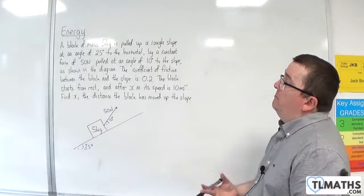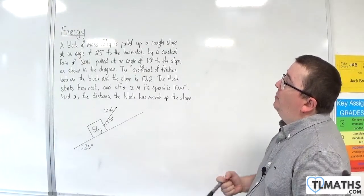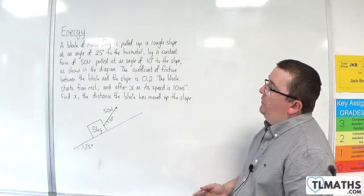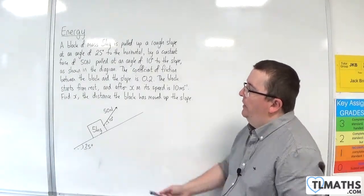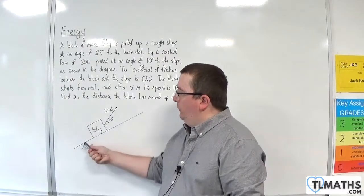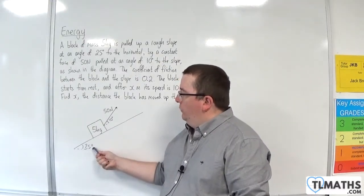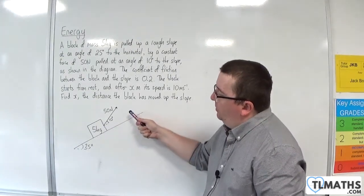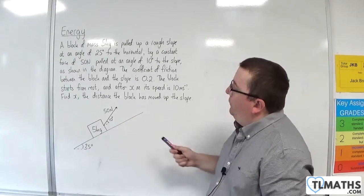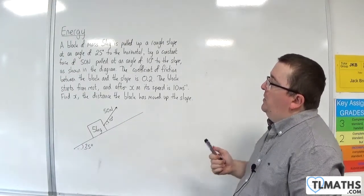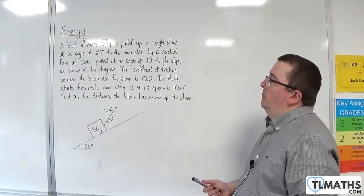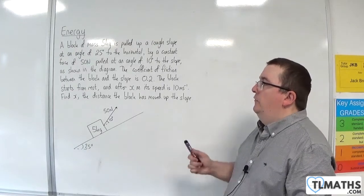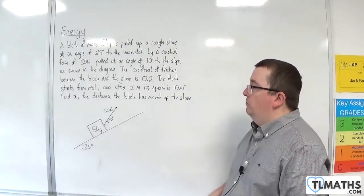In this problem, we have a block of mass 5 kilos pulled up a rough slope at an angle of 25 degrees to the horizontal by a constant force of 50 newtons, pulled at an angle of 10 degrees to the slope, as shown in the diagram. The coefficient of friction between the block and the slope is 0.2. The block starts from rest, and after x metres its speed is 10 metres per second. Find x, the distance the block has moved up the slope.